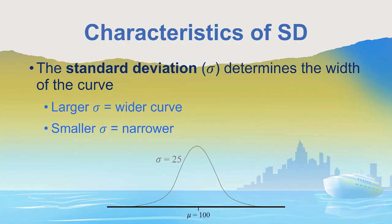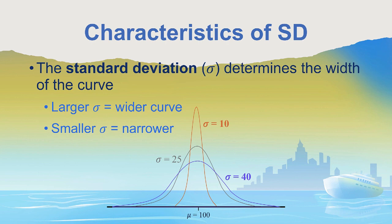The standard deviation for any normal curve determines the width of the curve. In this example, we have a normal distribution with a mean of 100 and a standard deviation of 25. If the standard deviation is larger, the curve will become wider — with a standard deviation of 40, we see how the curve has widened. And if the standard deviation is smaller, such as 10, the curve will become more narrow.